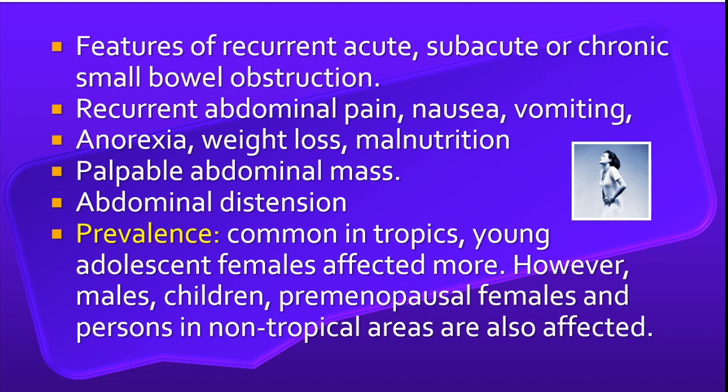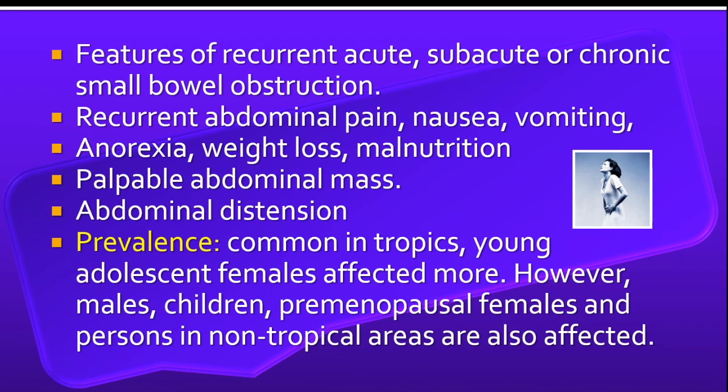Coming to the clinical features, there are usually features of recurrent acute, sub-acute or chronic small bowel obstruction. Recurrent abdominal pain, nausea and vomiting are usual presenting symptoms. The patient may also present with anorexia, weight loss, malnutrition, palpable abdominal mass and abdominal distension. This entity is common in the tropics and mainly affects young adolescent females.